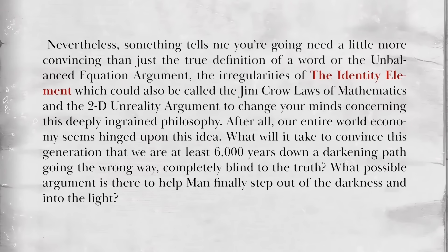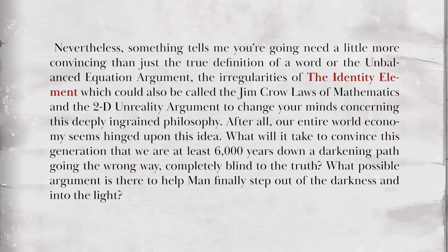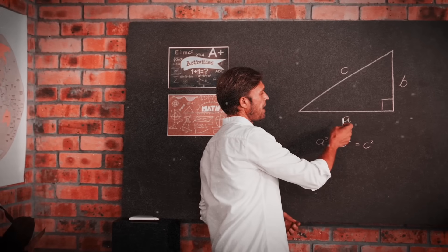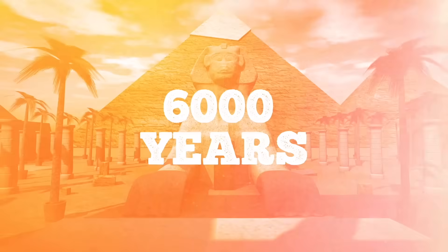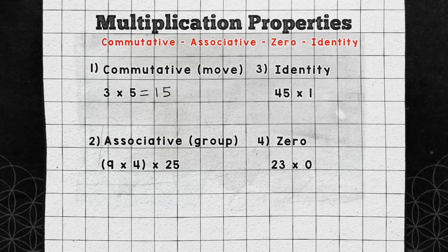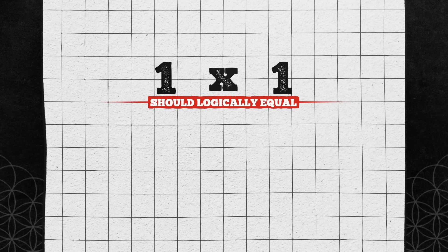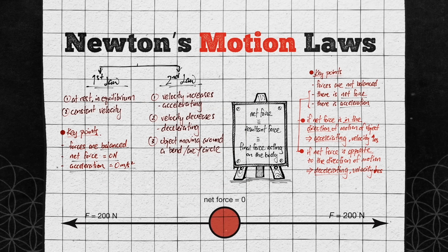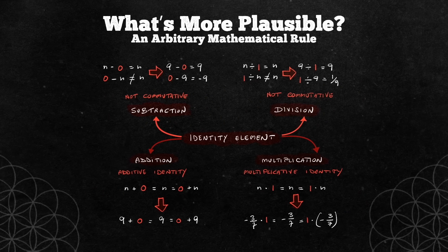Terrence boldly challenges the long-held belief that one times one equals one, proposing instead that one times one equals two. This assertion is based on the premise that multiplication inherently means an increase in number or quantity. If the result doesn't show an increase, it defies the fundamental concept of multiplication. This is the undisputed definition of the word, to multiply. Terrence points out that multiplication, governed by the commutative and associative laws, essentially involves adding a number to itself. He argues that by these laws, one times one should logically equal two.